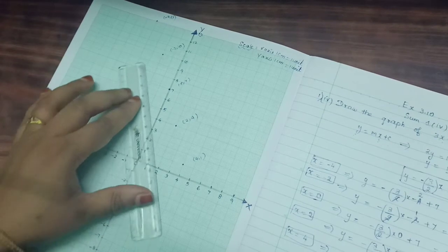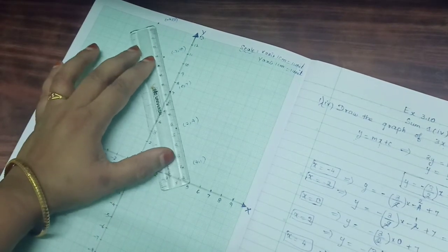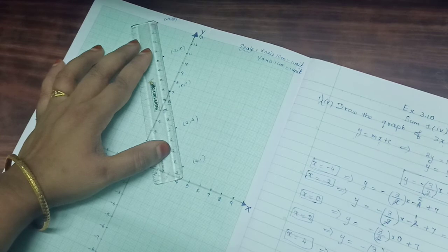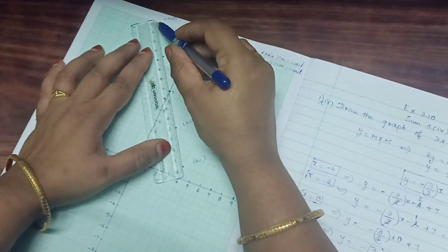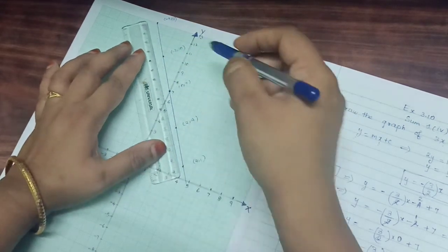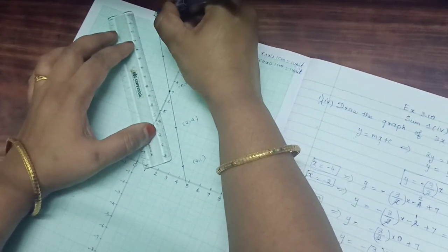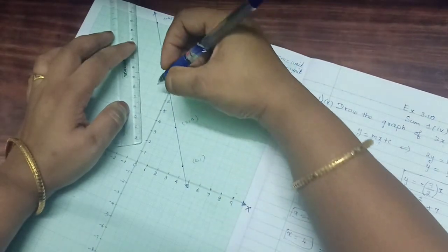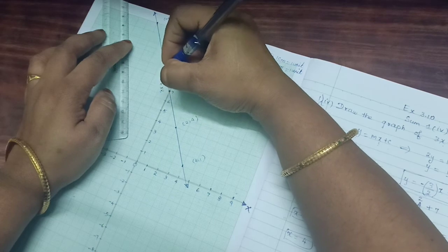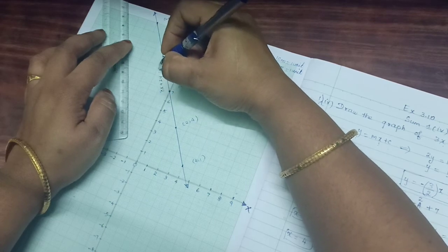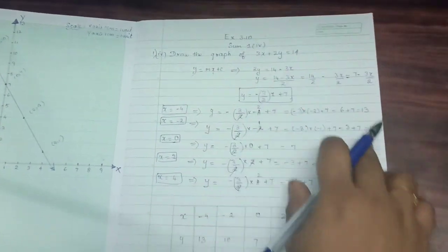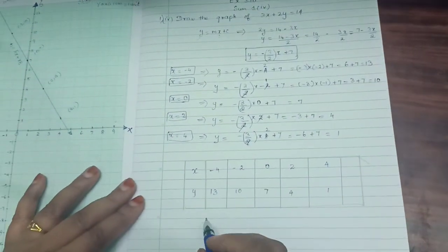Now we plotted all the points. So we are going to join it. You can clearly see when you join all the points, you are going to get a straight line. Join exactly. It is a line. You can extend also. You have to write the equation. We can write 3x plus 2y equals 14. So this is a graph of a linear equation 3x plus 2y equals 14 in two variables.